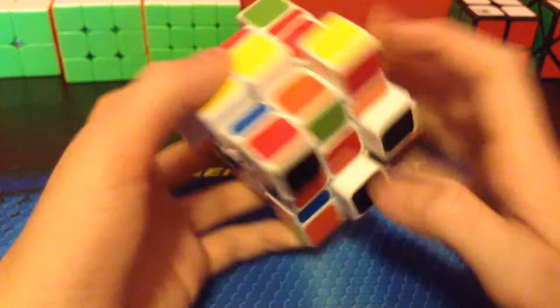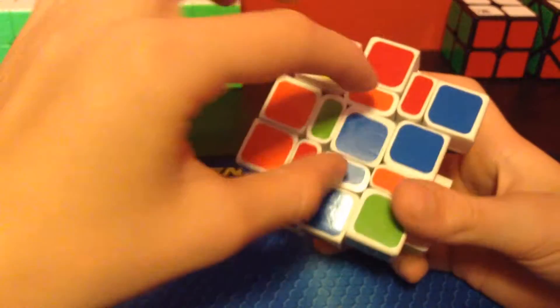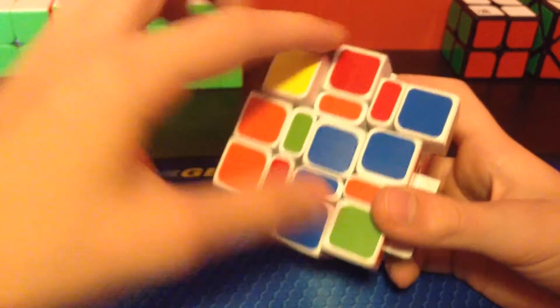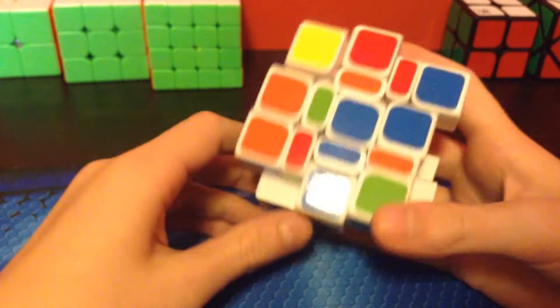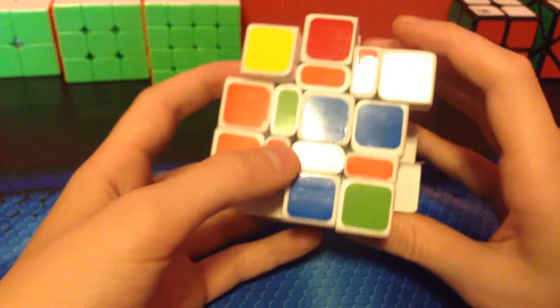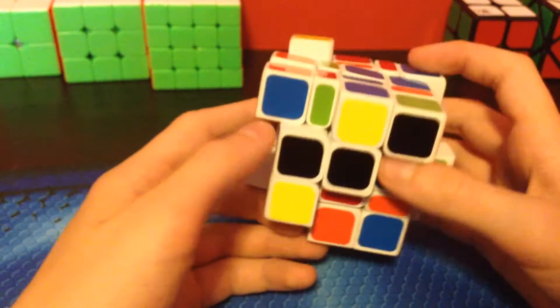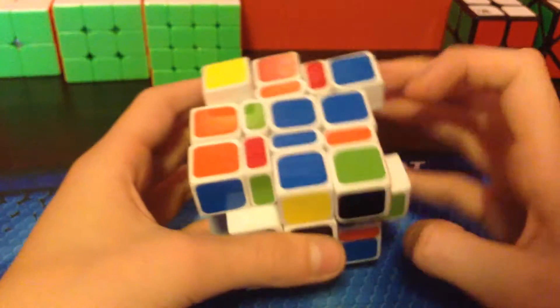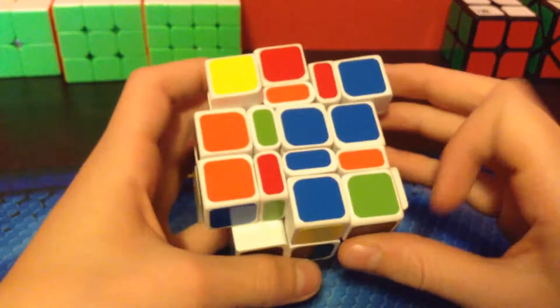So the first step to solve it is solving these middle 3 layers, like a 3x3, and I solve white cross first, so I would find the white center, or in this case a black center, and use that as the cross.